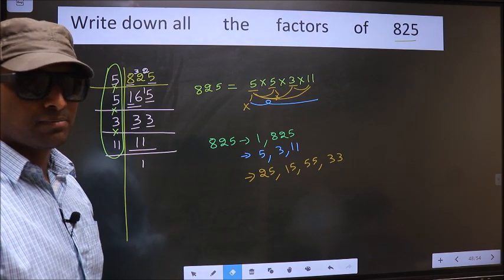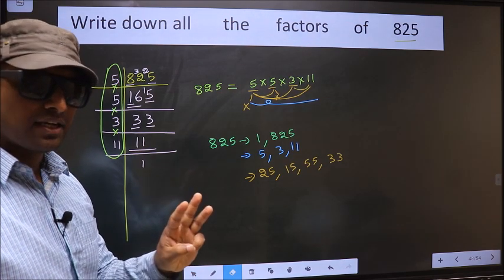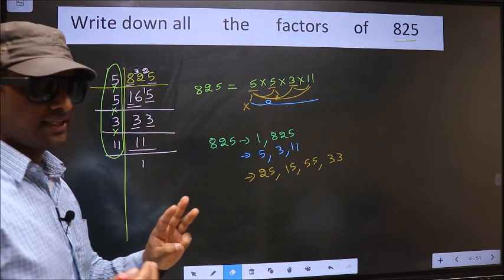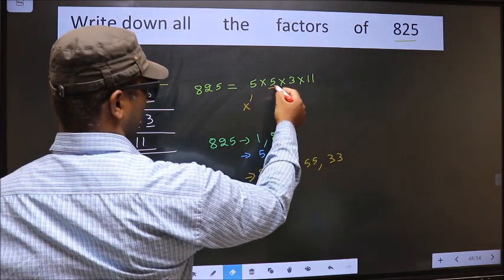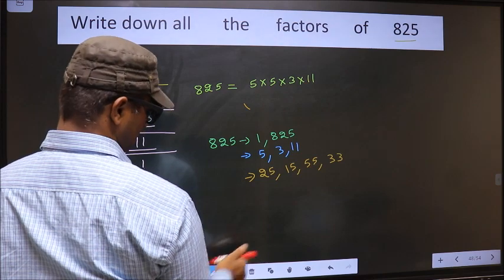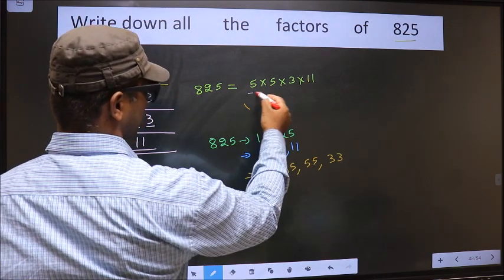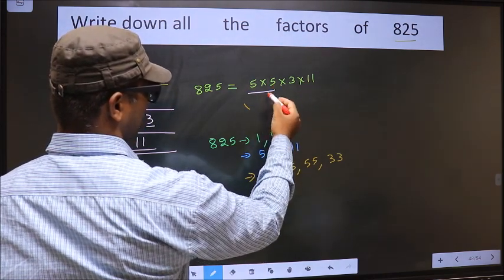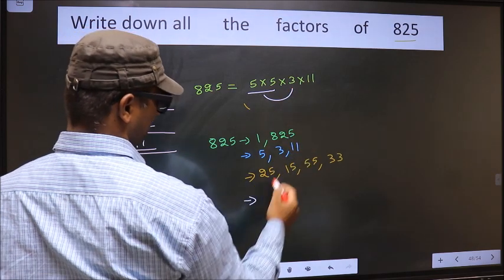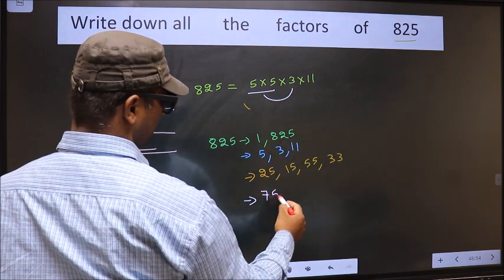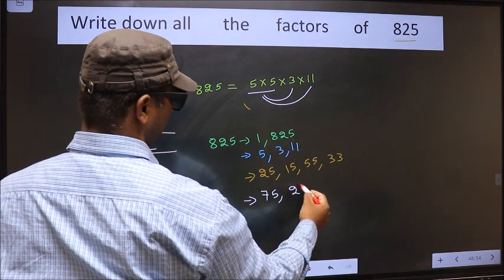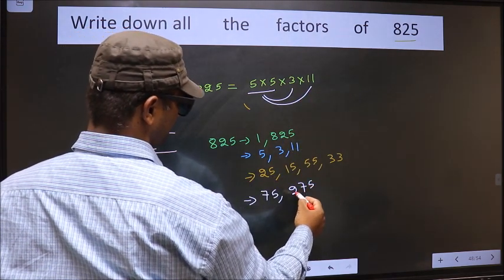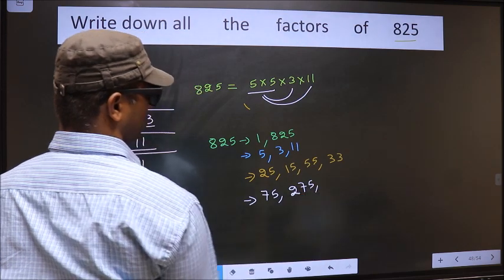Next. Now you take the combination of three numbers. How do we do that? See. First, I fix these two numbers. 5 into 5, 25. Combine with 3. 25 into 3, 75. Now combine with 11. 25 into 11, 275. Okay.